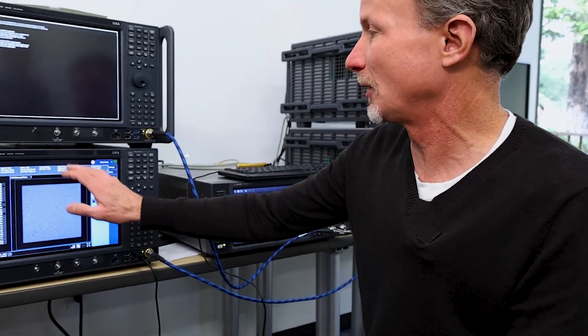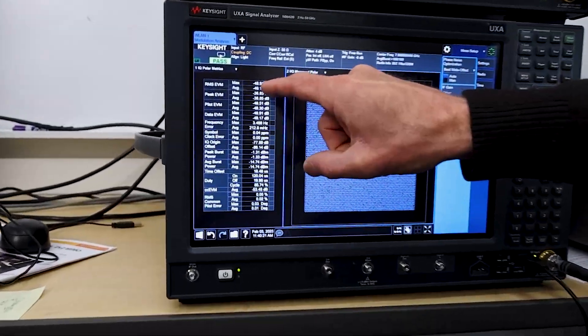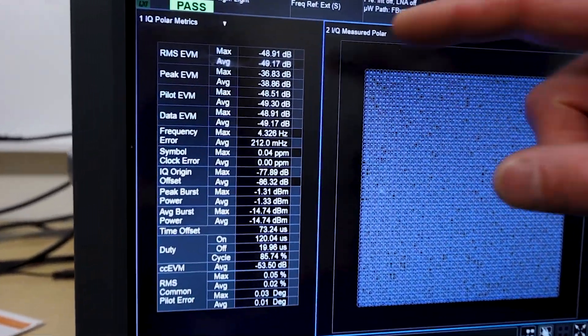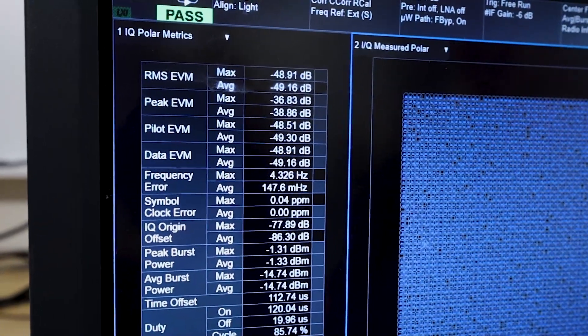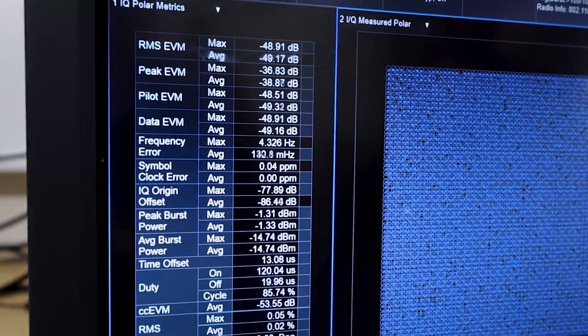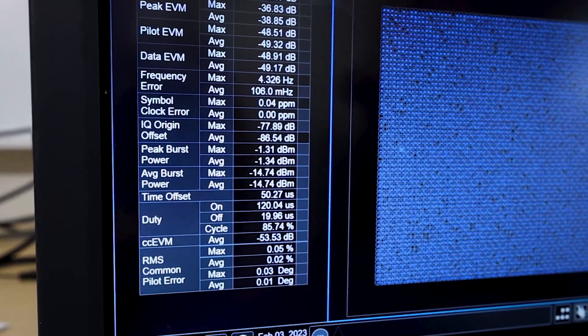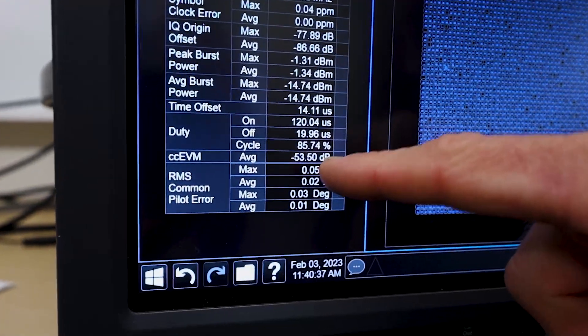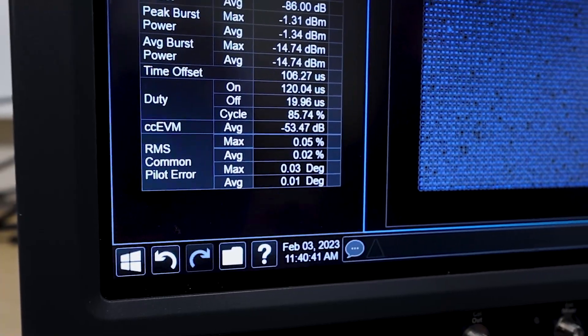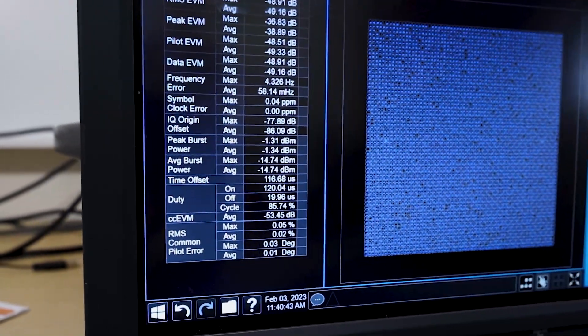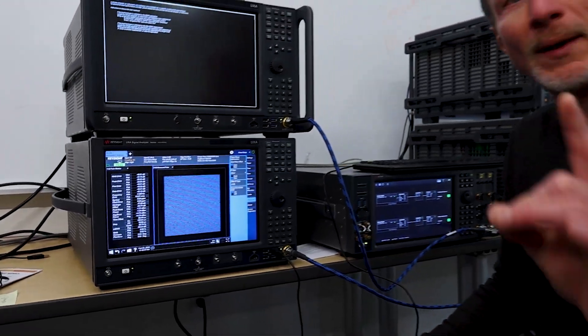So what do the results tell us? Well we see the constellation there that's the same that looks good. We have the single channel EVM here at the top and we're measuring right around minus 48 minus 49 dB. So we were measuring a little bit better than we did with the UXR in a single channel measurement. At the bottom we see the cross-correlation EVM and we're getting exactly the same result minus 53 dB. And that's what we would expect because we've removed all the noise from the measurement.